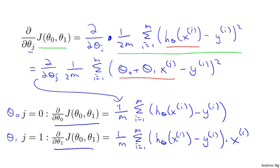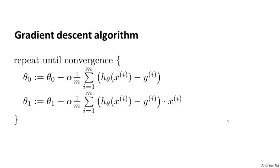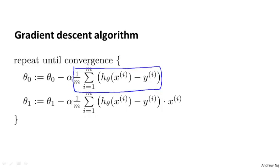Armed with what we worked out to be the derivatives — which are really just the slope of the cost function J — we can now plug them back into our gradient descent algorithm. So here's gradient descent for linear regression, which repeats until convergence: theta_0 and theta_1 get updated as the current value minus alpha times the derivative term. This first term is just the partial derivative with respect to theta_0 that we worked out on the previous slide.